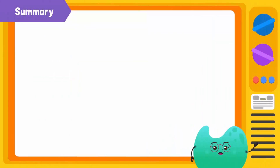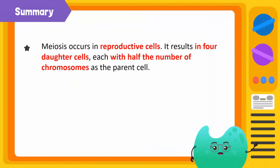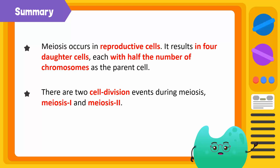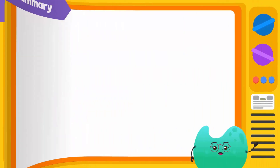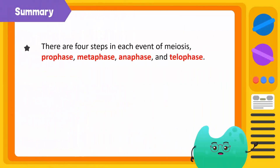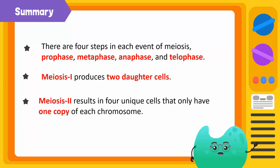Let's summarize. Meiosis is a type of cell division that occurs in reproductive cells. It results in four daughter cells, each with half the number of chromosomes as the parent cell. There are two cell division events during meiosis: meiosis I and meiosis II. There are four steps in each event of meiosis — prophase, metaphase, anaphase, and telophase. Meiosis I produces two unique daughter cells. Meiosis II results in four unique cells that have half the number of chromosomes as the parent cell.